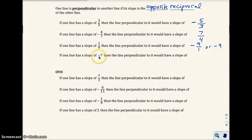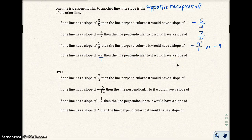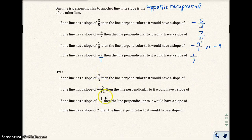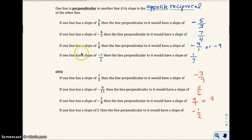If one line has a slope of negative 7, the perpendicular line has a slope of positive 1 over 7 — it's positive because of the opposite sign, and 7 over 1 flips to 1 over 7 as the reciprocal. Go ahead on your own and figure out the next four perpendicular slopes, then pause and check your answers. The answers are: negative 3 over 7, then 11 over 6, then 4, and then negative 1 half.